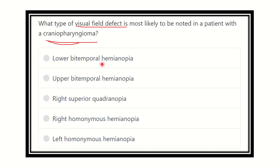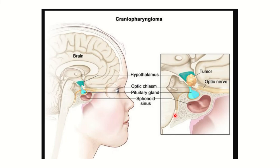The options are: lower bitemporal hemianopia, upper bitemporal hemianopia, right superior quadrantanopia, right homonymous hemianopia, and left homonymous hemianopia. We have to find out which option is the correct answer.